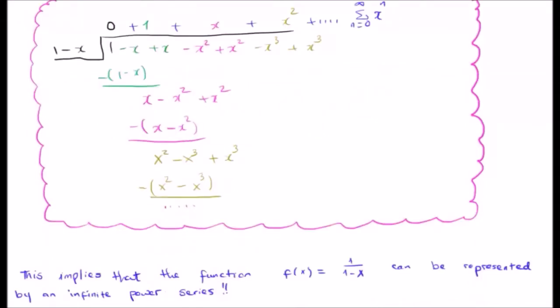The point really is that the function one over one minus x can be represented by an infinite power series. Now, while this might be something which you're familiar with already, this is in my opinion quite an important property and it was quite a big deal when it was first discussed and discovered that this is possible. So we're going to build upon this and discuss the Taylor and Laurent series.